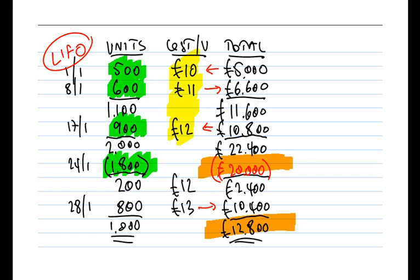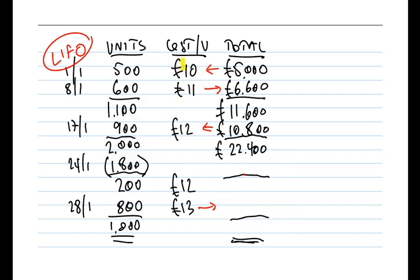Now let's consider our second method: LIFO — Last In, First Out. Under LIFO, much of the information is the same. We still had opening inventory of 500 units with a total value of £5,000. We still purchased 600 units on the 8th at £11 per unit, giving a total of £6,600. So at end of day on the 8th, we've still got 1,100 units totalling £11,600. On the 17th, we still purchased 900 units at a total of £10,800 — that's £12 per unit — giving us 2,000 units valued at £22,400. The purchases are dealt with exactly the same way across all methods.